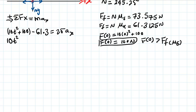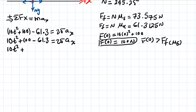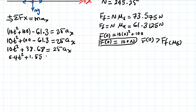Simplifying: 10t² + (100 − 61.3125) = 25·ax → 10t² + 38.68 = 25·ax. Dividing through by 25 gives ax(t) = 0.4t² + 1.55 m/s².